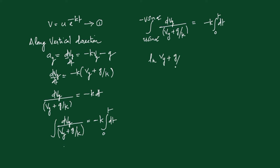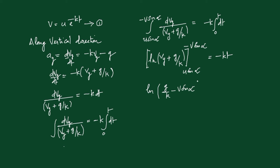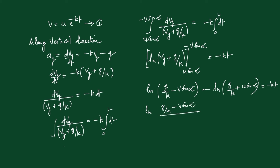After integrating, we get ln(vy + g/k) evaluated from u sin alpha to -v sin alpha, equal to -kt. Applying the limit: ln(-v sin alpha + g/k) - ln(u sin alpha + g/k) = -kt, which can be rewritten as ln(g/k - v sin alpha) - ln(g/k + u sin alpha) = -kt. Using log properties: ln[(g/k - v sin alpha)/(g/k + u sin alpha)] = -kt.